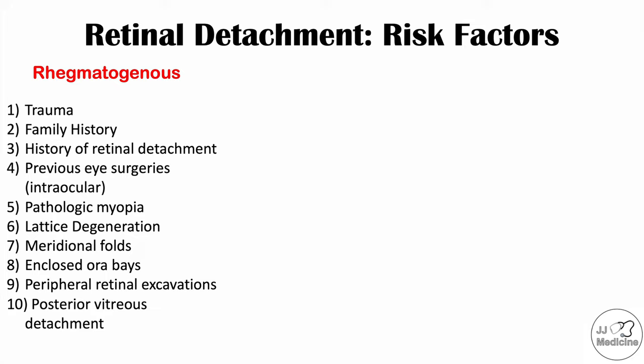Additional risk factors for regmatogenous detachment include previous intraocular surgeries, which could injure the retina causing a tear, and pathologic myopia. There are also anatomical risk factors: lattice degeneration, meridional folds, enclosed ora bays, peripheral retinal excavations, and the ophthalmological condition posterior vitreous detachment.